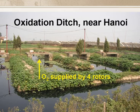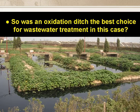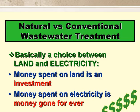This slide shows an oxidation ditch serving a small town near Hanoi in Vietnam. The oxygen required for BOD removal is supplied by four rotors, but the installed power was only 2 kW, and the power is not normally switched on. This is actually quite common as the local authority can't afford to pay the electricity bill. So we have to ask: was an oxidation ditch the best choice in this case? The answer is a resounding no. When comparing natural wastewater treatment in ponds with conventional electromechanical treatment such as activated sludge, the choice really boils down to a choice between land and electricity.